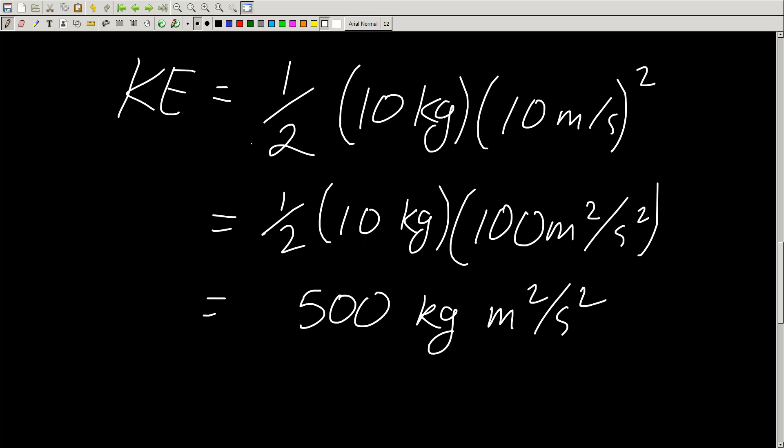And what's neat is that this unit of kilograms meters squared per second squared is actually a special unit in physics. The SI unit is J for joules. So those units, kilogram meters squared per second squared, are units of joules.